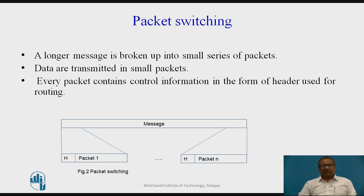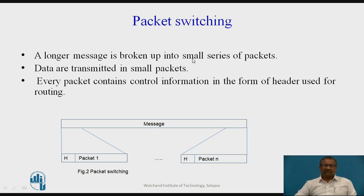In packet switching, a longer message is broken up into a small series of packets. The message is now broken into small packets, which are then transmitted from source to destination through nodes in a network having store-and-forward facility. This large message is broken into n number of packets — packet number one through packet number n — and each packet has header information used for routing, to find the path from source to destination.